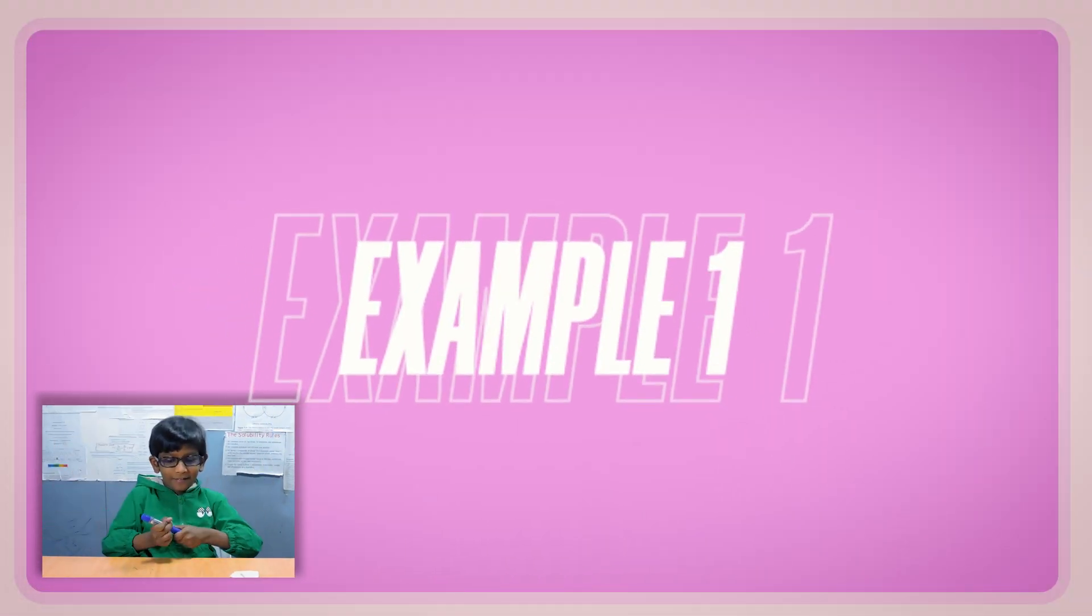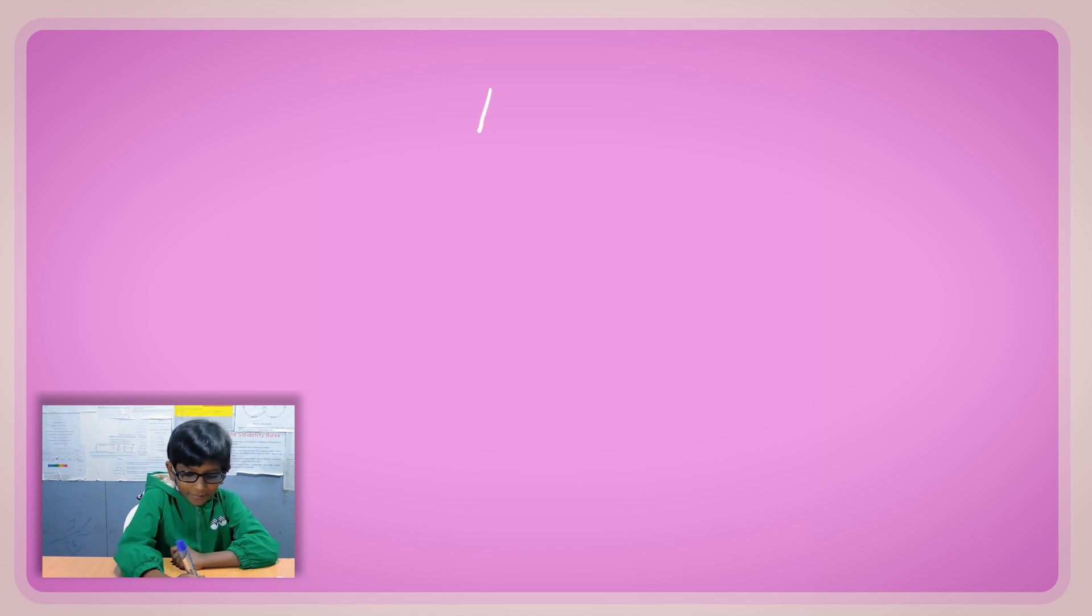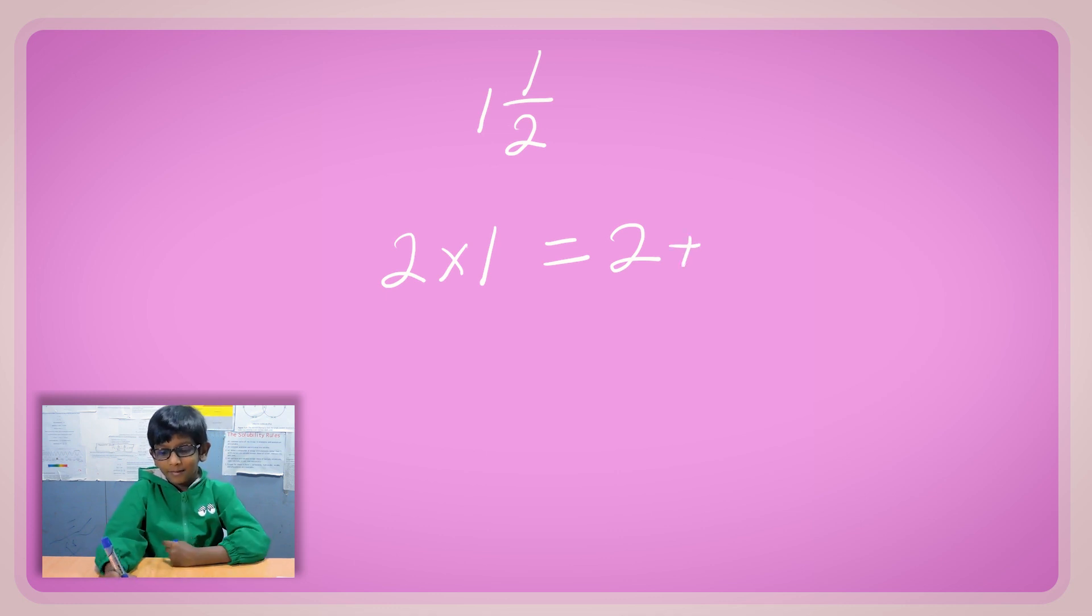Example 1. We are going to do 1 and a half. For 1 and a half, we have to first multiply 2 by the whole number. We have to multiply the denominator by the whole number. 2 times 1 and then we add the 1. First we multiply, we add 2 plus 1, and then we get 3. So 3 at the top and the denominator stays the same.